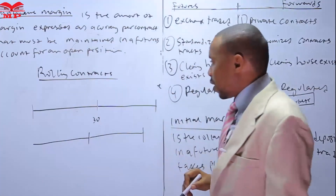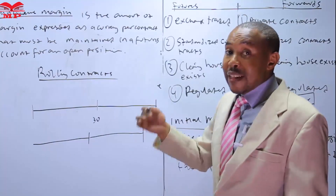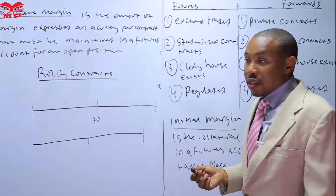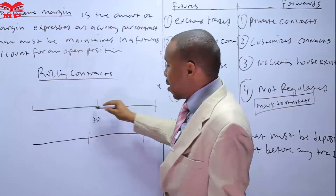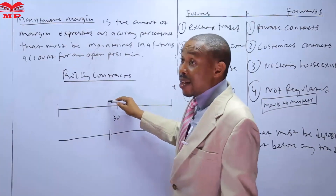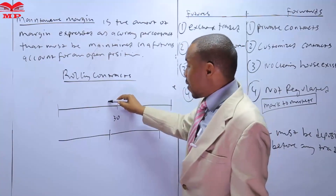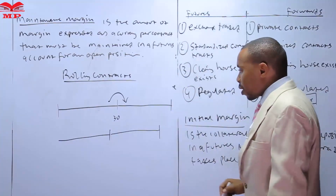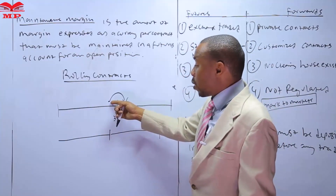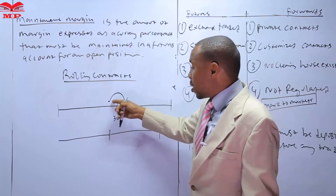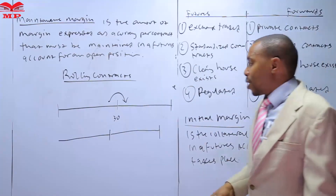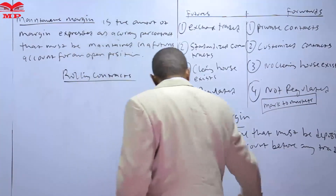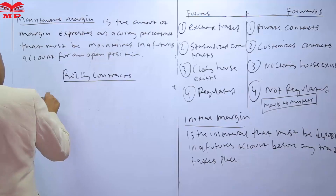The process of maintaining that exposure towards futures contracts is what we're calling rolling contracts. You are trying to roll over — supposing you've earned a return within that period, you intend to earn another return over the next available period. You carry forward and avail that exposure by rolling it over to the next available futures contract.